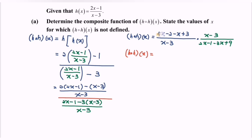Simplifying the numerator: 4x minus x gives 3x plus 1. Simplifying the denominator: 2x minus 3x gives negative x plus 8. So h∘h(x) equals (3x plus 1) over (negative x plus 8).